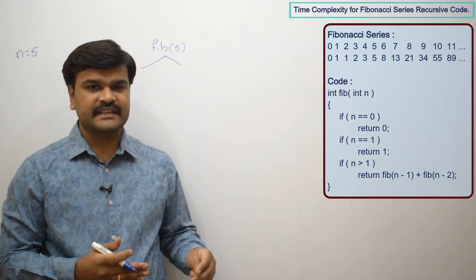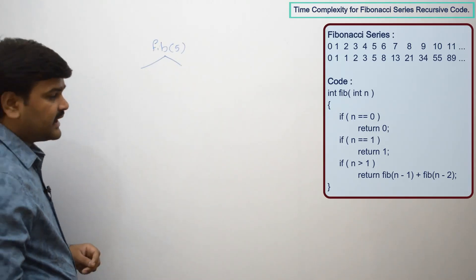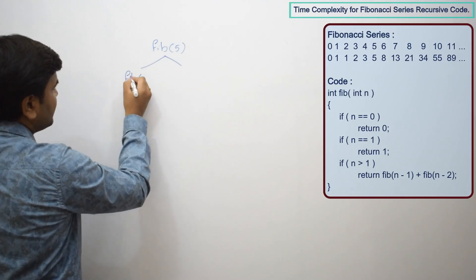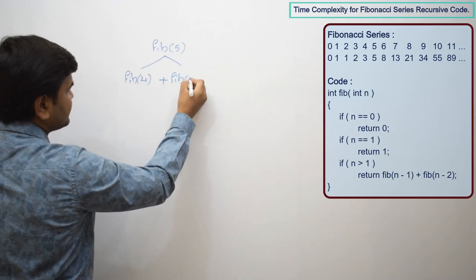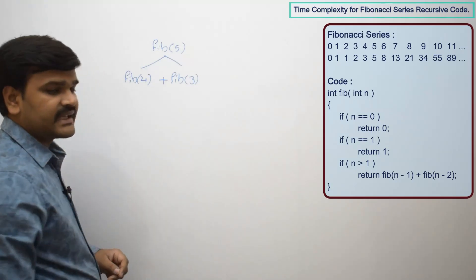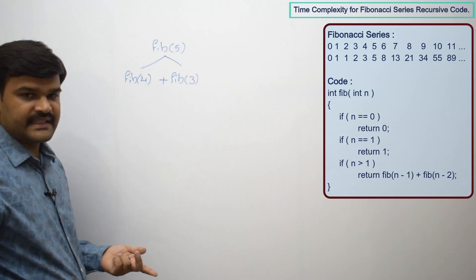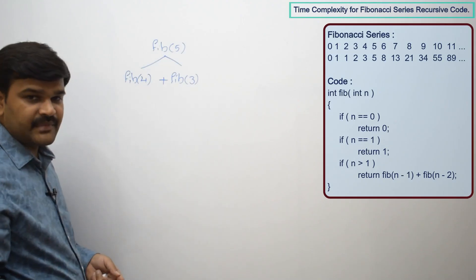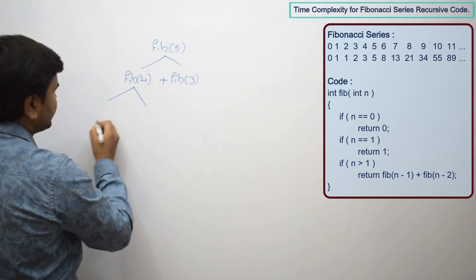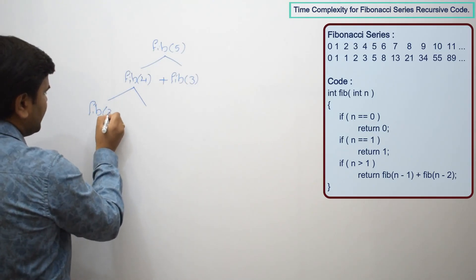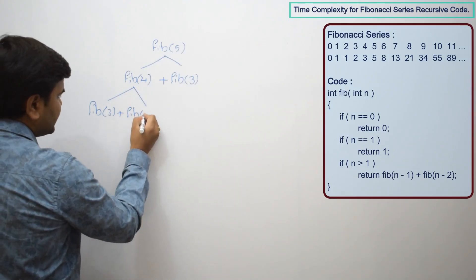For n = 5, fib(5) calls fib(4) plus fib(3). This result plus fib(3) will become the 5th Fibonacci number. Now, to find the 4th Fibonacci number — fib(4) calls fib(3) plus fib(2), that is (4-1) plus (4-2) = fib(3) plus fib(2).